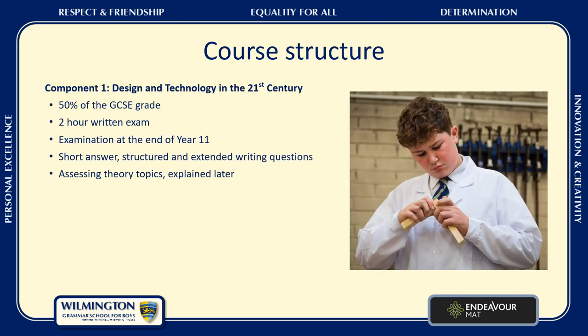The course is split up into two sections. Component 1: Design and Technology in the 21st Century. This is 50% of your GCSE grade. It's a two-hour written exam with the examination at the end of Year 11. The written paper is structured into short answer questions, some slightly more structured questions, and some extended writing questions, and it will assess a variety of theory topics, which I'll explain in a moment.